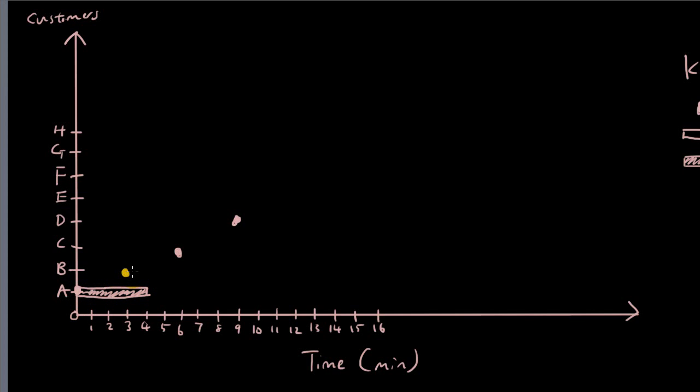Now we don't even need to look at the table to draw the rest, because we know that customer B has to wait till customer A leaves. When customer A is still being served from the third minute to the fourth minute, customer B has to wait during that time. Once customer A is gone, then customer B is now being served for four minutes. So one, two, three, four. They are being served all the way to the eighth minute.